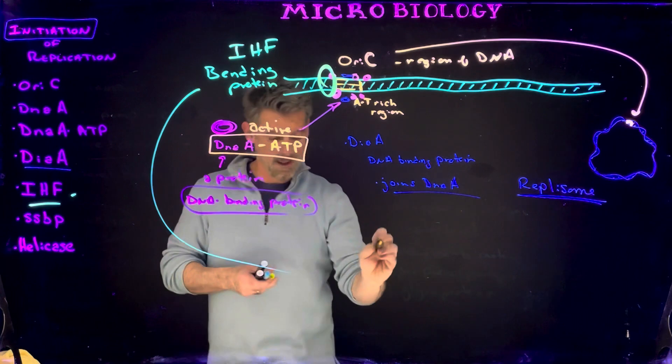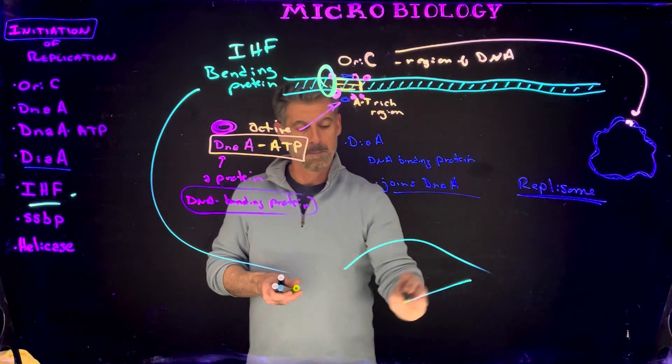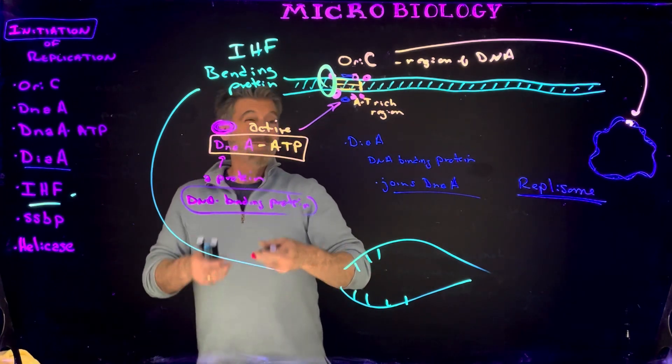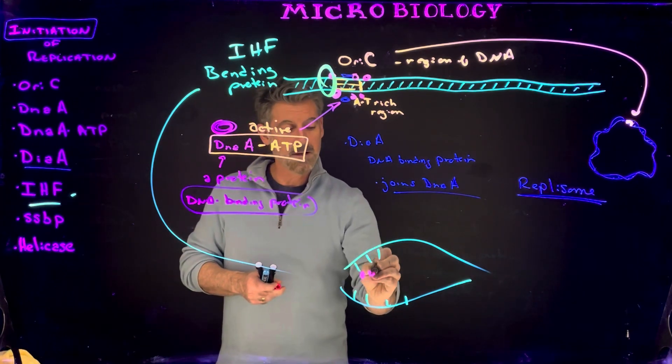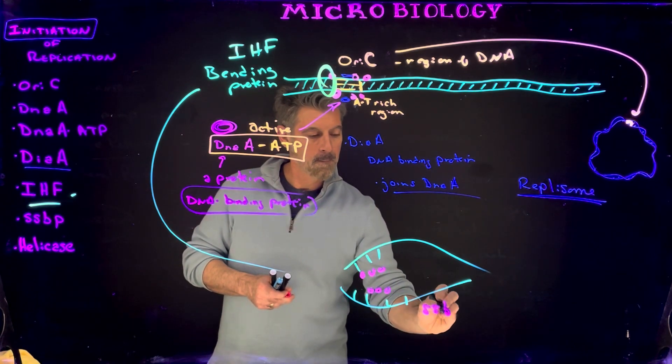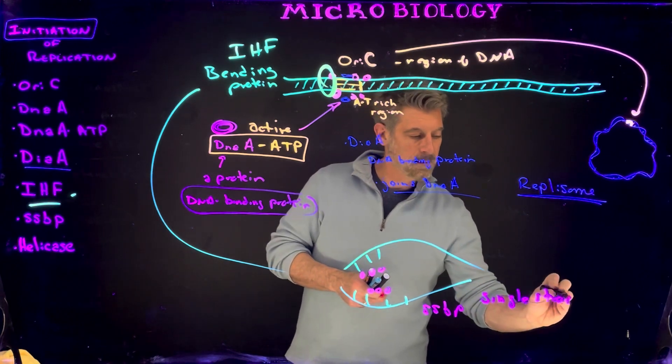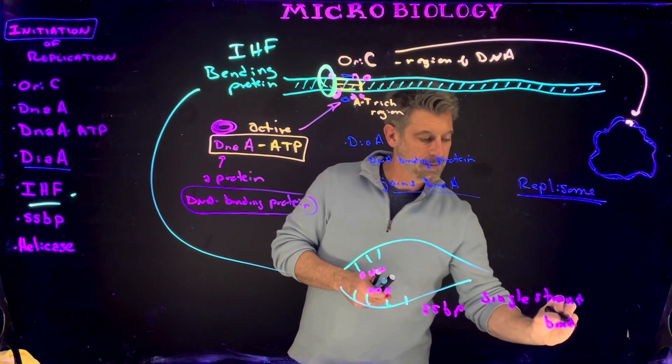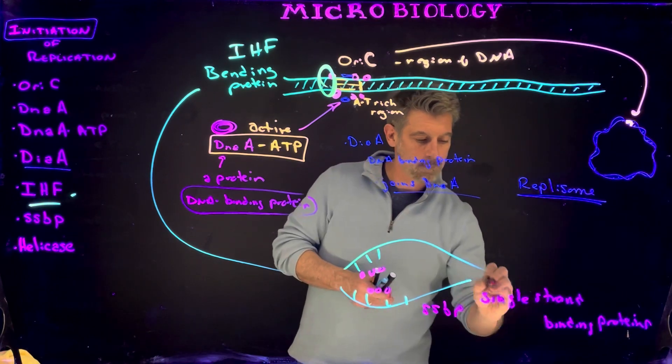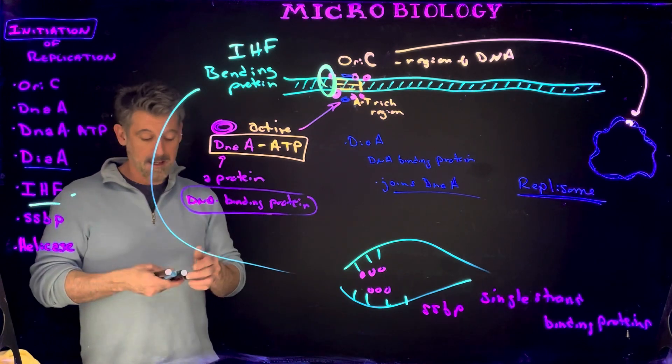So the strands get opened up. And then we have to have, and then we can really kind of get started here. So then single strand binding proteins would come in. So those are single strand binding proteins. They kind of temporarily keep pieces of DNA apart.